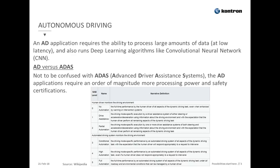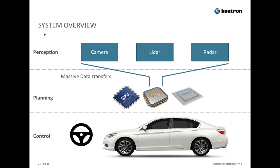Autonomous driving, AD for short, requires the ability to process large amounts of data at very low latency. AD is different from ADAS — Advanced Driver Assistance System — because it requires an order of magnitude more processing power and safety certifications. Six levels of autonomy are defined by SAE, ranging from level 0, meaning no automation, to level 5, which is full car autonomy in all conditions. In general, AD systems consist of three phases: perception, planning, and control.